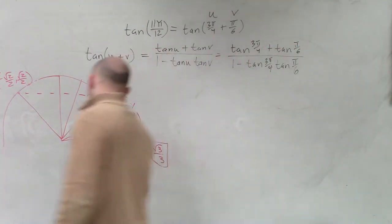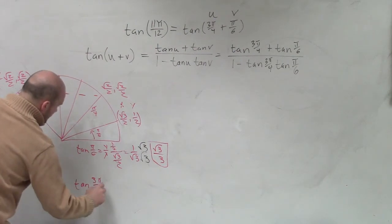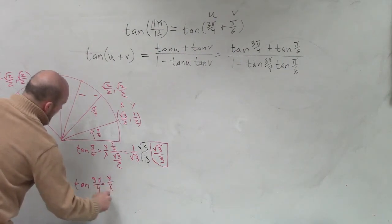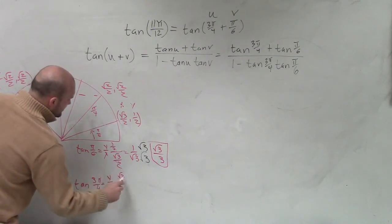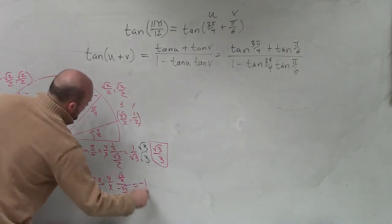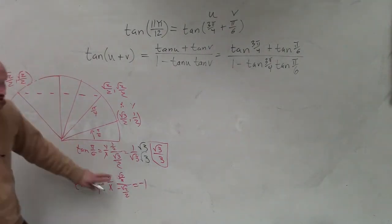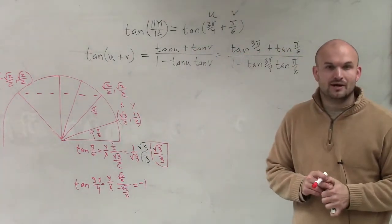So the tangent of 3π over 4, which is y over x, is going to be positive square root of 2 over 2 divided by negative square root of 2 over 2, which equals negative 1. So now we know the values of tangent for both of those. You have to be able to do this quickly.